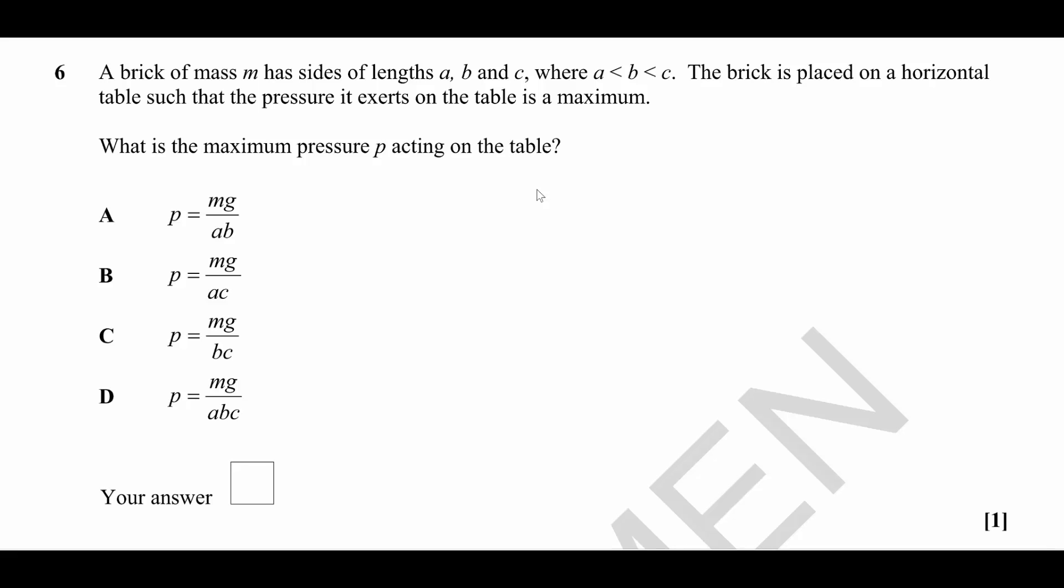Question number six gives us a brick. It is a cuboid with lengths A, B and C, where A is the smallest length, followed by B, followed by C as the largest dimension.